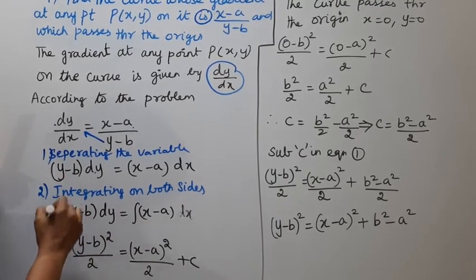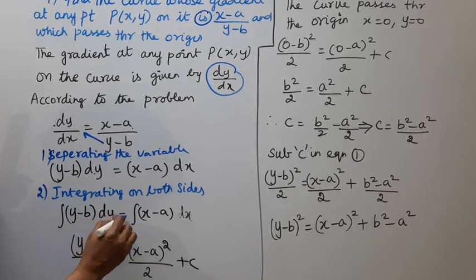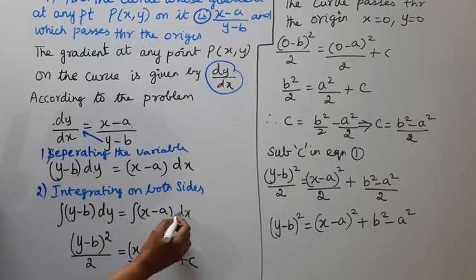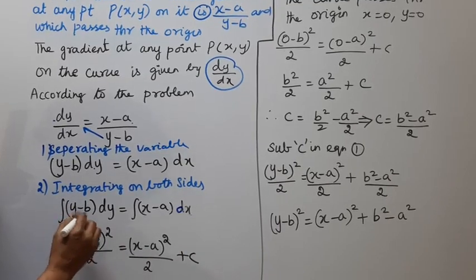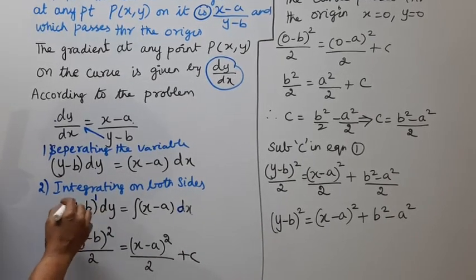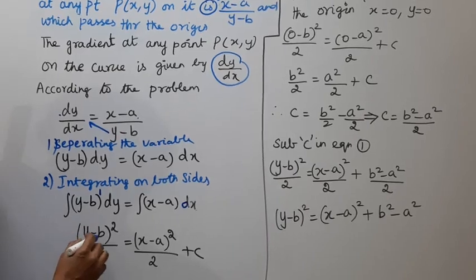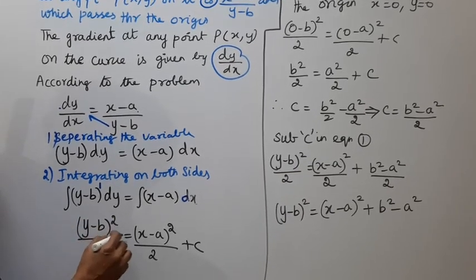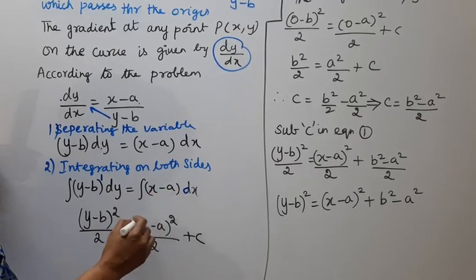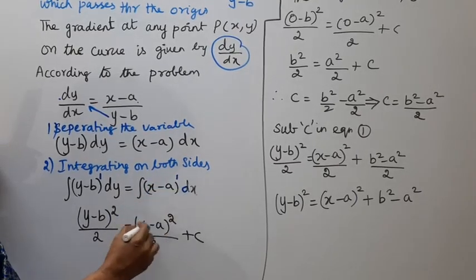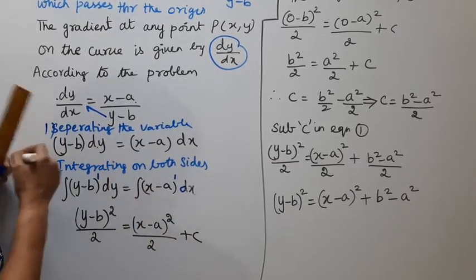Integrating on both sides: integration of (y-b) dy equal to integration of (x-a) dx. That gives (y-b) whole square by 2 equal to (x-a) whole square by 2 plus c.